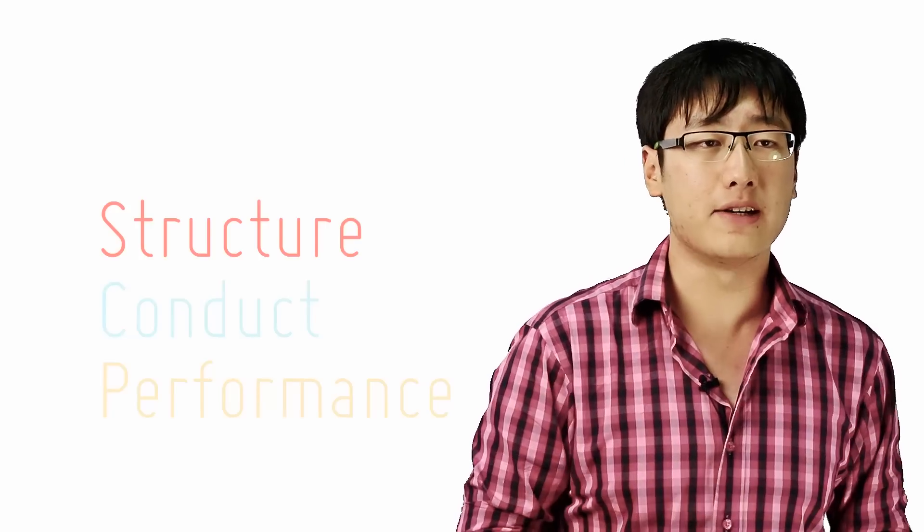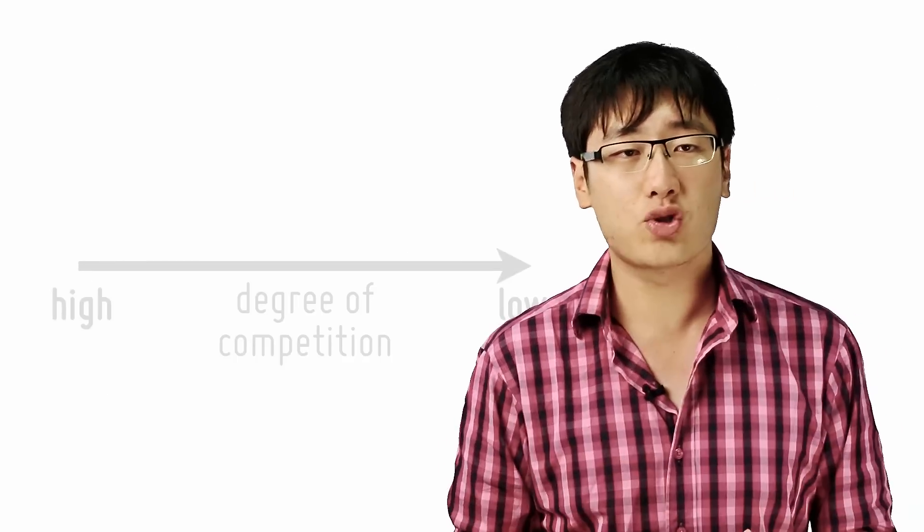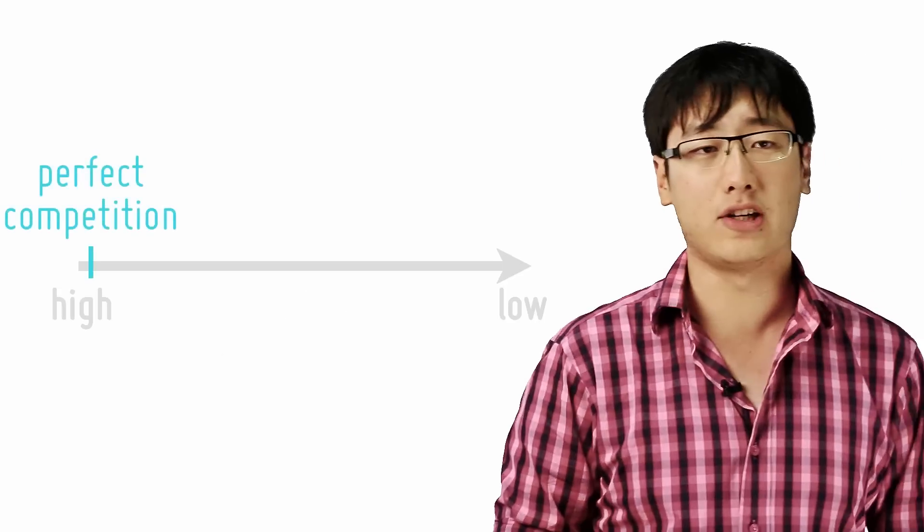So we divide the industries into categories according to the degree of competition that exists between the firms in the industry. There are actually four such categories. At one extreme is perfect competition.